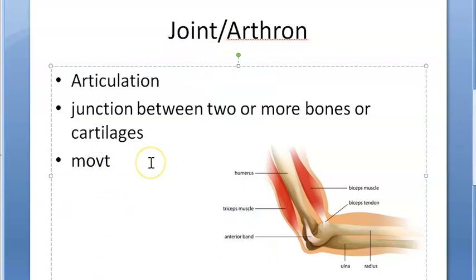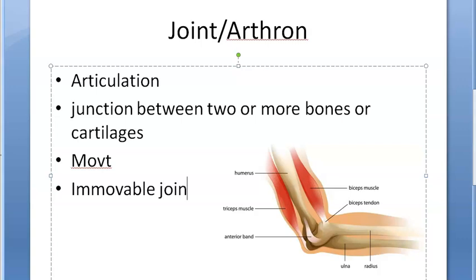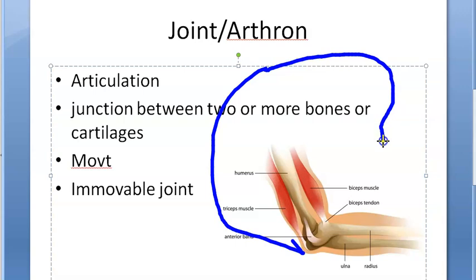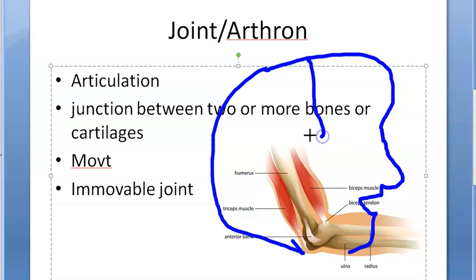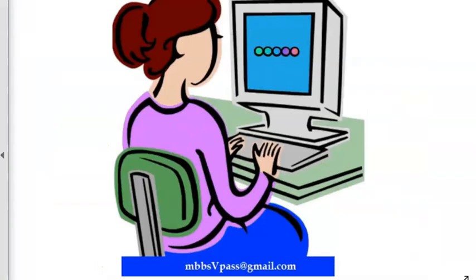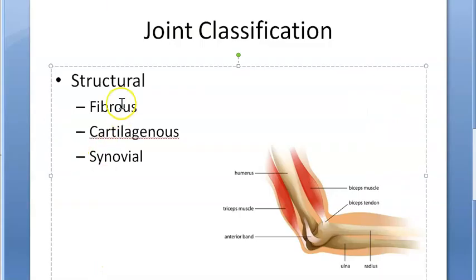However, there are joints which do not give movement - immovable joints. Like in your skull, there are some joints. This is your skull. There are some joints which do not allow you to move. But these were probably mobile earlier, and now they are fused. Now let us look at some things which are difficult - the classification of joints.